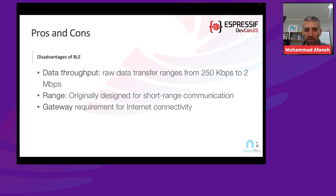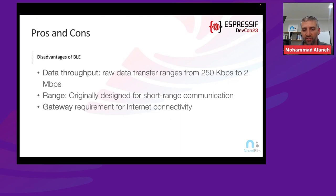In terms of disadvantages, data throughput is somewhat limited, especially when targeting low power consumption. Raw data transfer rates can range from 250 Kbps to 2 Mbps at the radio level, but accounting for headers and overhead, it comes down to about 1.3 to 1.4 Mbps at the application layer using high-speed mode. Range is another limitation — BLE was designed for short-range communication. And finally, BLE requires a gateway or proxy device to send data to the internet since there's no native IP connectivity.